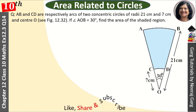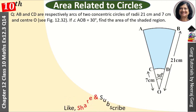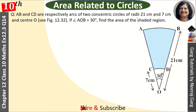AB and CD are respectively arcs of two concentric circles of radii 21 cm and 7 cm and center O. If angle AOB is 30 degrees, find the area of the shaded region.